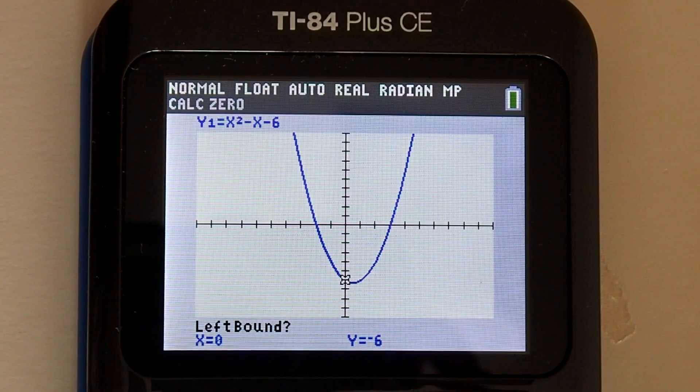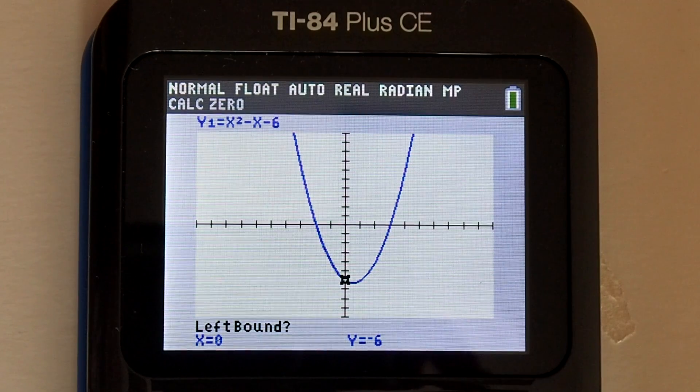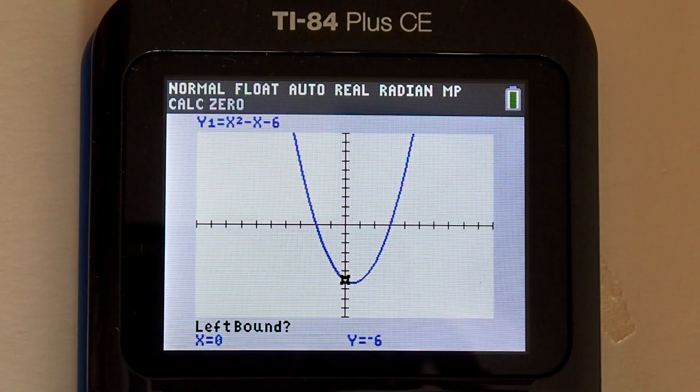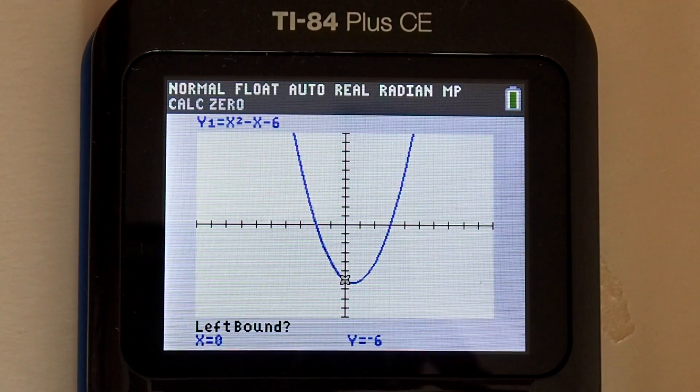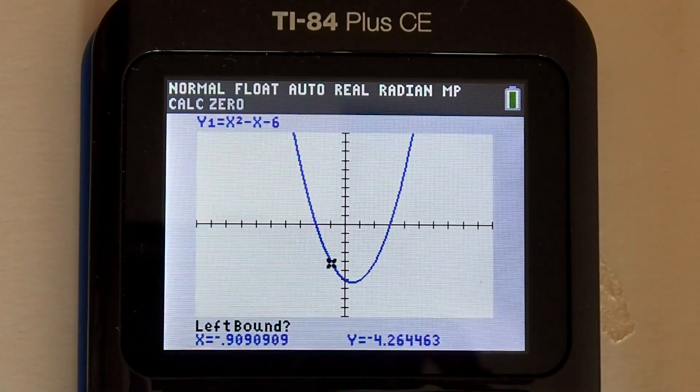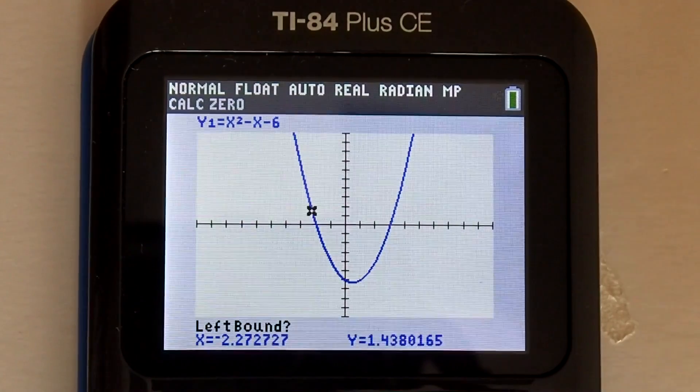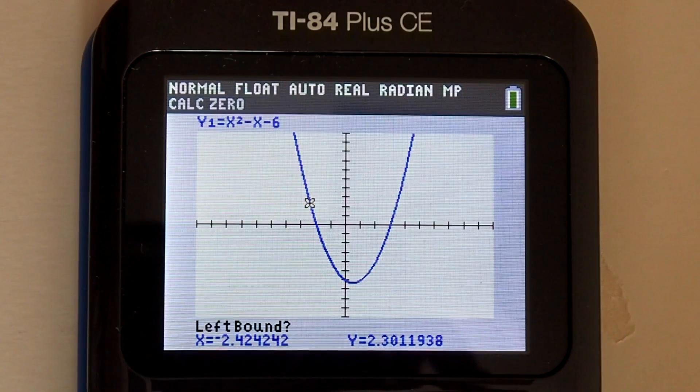You see the blinking cursor on the graph? On the bottom of the screen is asking for a left bound. We will confirm the x intercept at x equals negative 2. So we want to set a left bound left of x equals negative 2. Using the left arrow key, move the cursor left of x equals negative 2. That is good. Anywhere to the left of x axis of negative 2. Press the enter key.